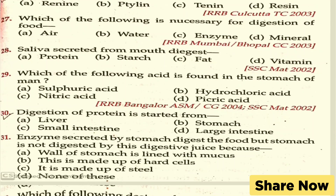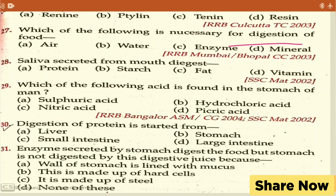Which of the following is unnecessary for digestion of food? Minerals are unnecessary — the necessary ones are water and enzymes. Saliva secreted from the mouth digests starch. Hydrochloric acid is found in the stomach. Digestion of protein starts from the stomach. The stomach is not self-digested because the wall of the stomach is lined with mucus.